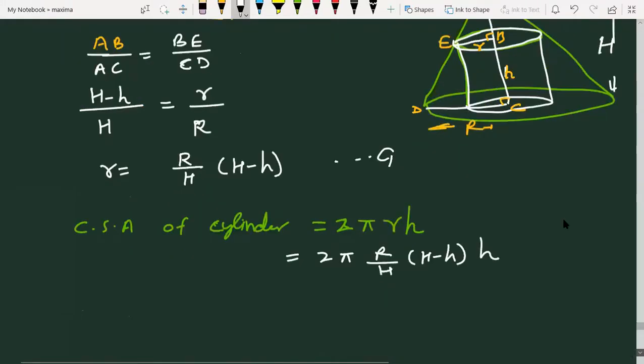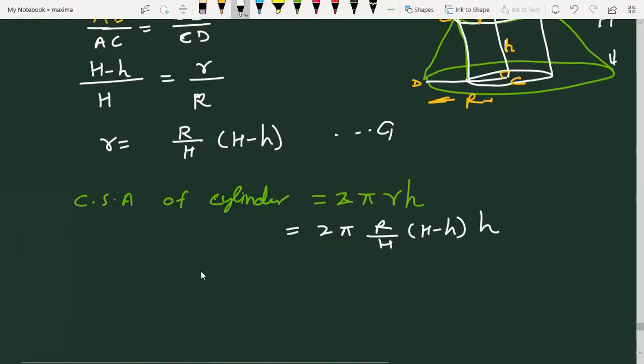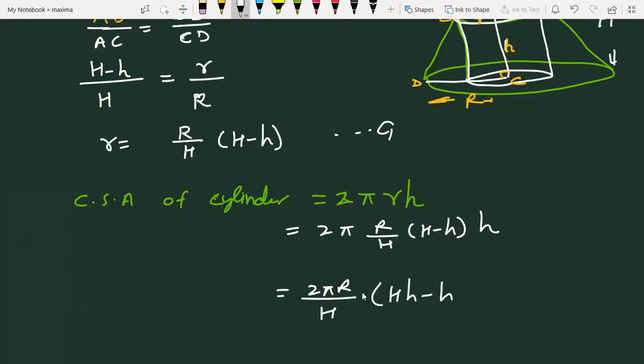Because H and capital R are fixed. So, 2πr upon H. This is our function. Now, we will differentiate it and set it equal to zero for the maximum. So, let's do this derivative. Capital H minus 2h.